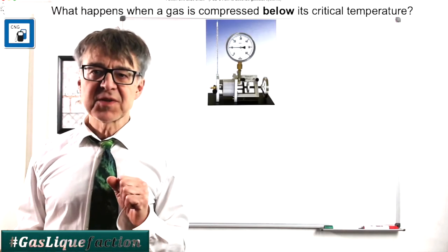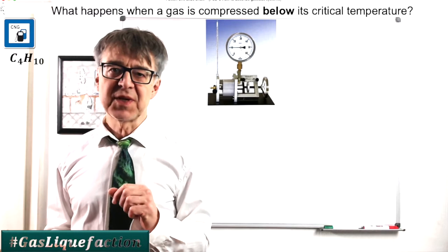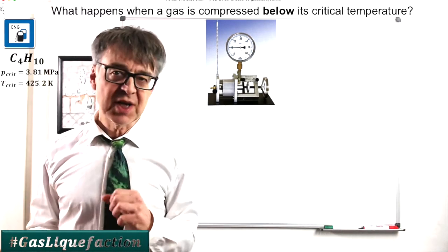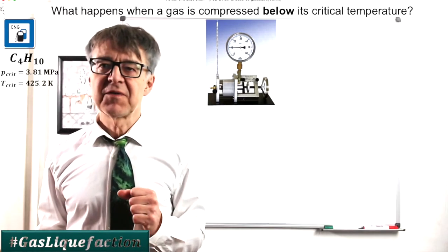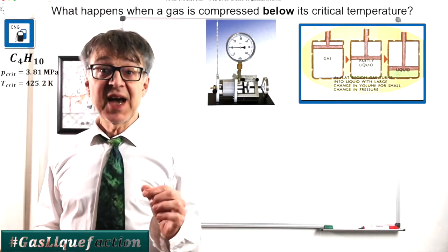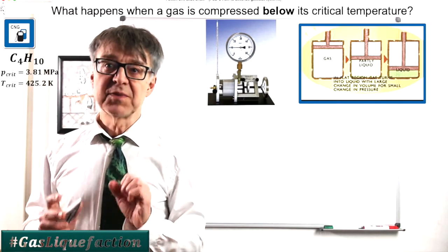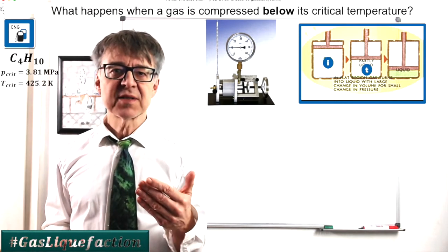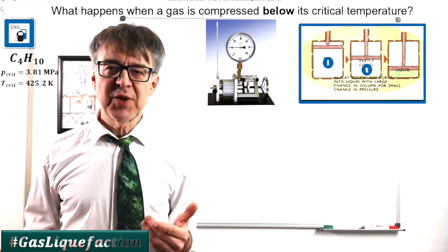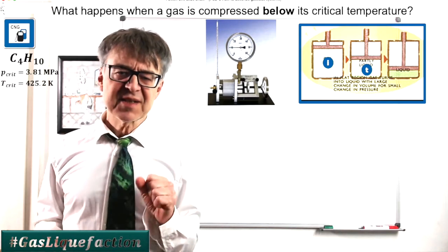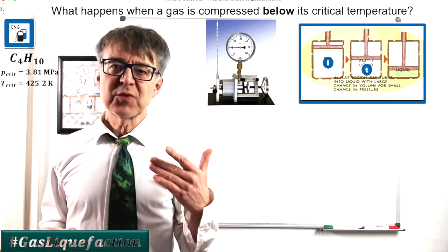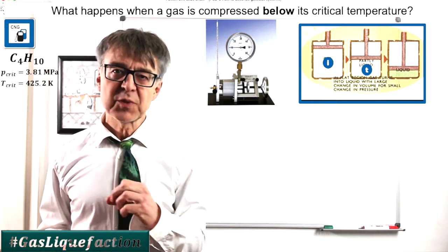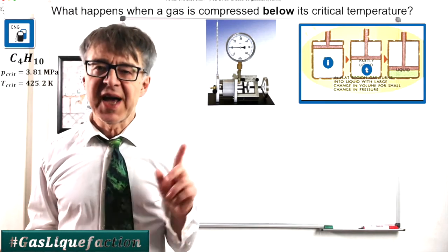Now let's repeat this process with the gas below its critical temperature. Let's put butane in a cylinder and reduce its volume at room temperature. First, the pressure and density of the system will rise, but as we reach a certain pressure, the particles are so tightly packed that the attractive forces cause the gas to condense. The first liquid drops will form at D.